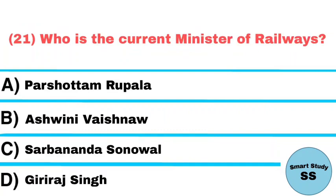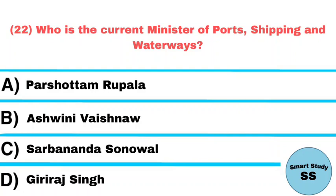Question number 21: Who is the current minister of Railways? Answer: Ashwini Vaishnaw. Question number 22: Who is the current minister of Ports, Shipping and Waterways? Answer: Sarbananda Sonowal.